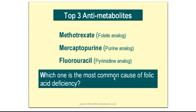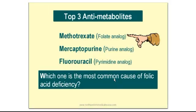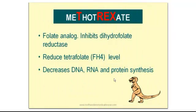Which one of the 3 is the most common cause of folic acid deficiency? That would be Methotrexate, because the mechanism of its action involves depletion of folic acid. Methotrexate is our T-Rex. It's a folate analog that inhibits the dihydrofolic acid reductase enzyme. Therefore we cannot activate folic acid to make tetrahydrofolic acid, which is the most active form of folic acid.